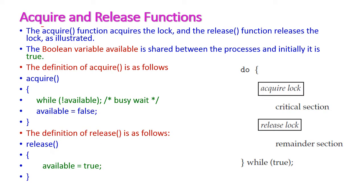Now let us see the acquire and release functions of mutex locks. The acquire function is used to acquire the lock — that is, get the lock — and the release function is used to release the lock. Here, 'available' is a boolean variable which is common for all the processors, and initially its value is true.